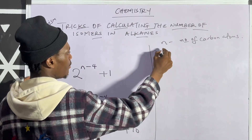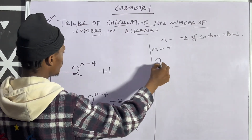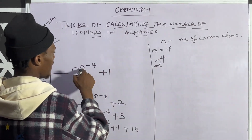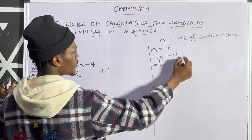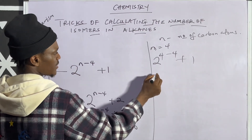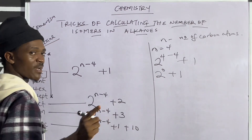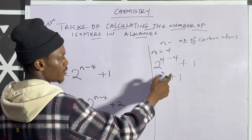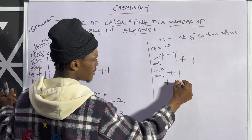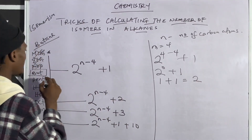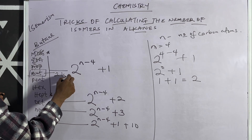For butane, 'but' represents four carbons, so our n = 4. Using the formula: 2^(4−4) + 1. Four minus four is zero, so it becomes 2^0 + 1. Anything raised to the power of zero is one, so that is 1 + 1, which equals 2. So butane has 2 isomers.